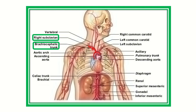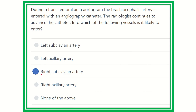From the brachiocephalic trunk, the catheter can enter the right subclavian artery or the right common carotid. The right subclavian offers a more favorable angle for the angiography catheter to enter. So the answer is the right subclavian artery — after the brachiocephalic artery, the angiography catheter will be introduced into the right subclavian artery, not the left subclavian, axillary, or any other vessel.